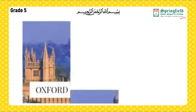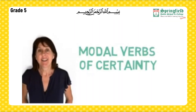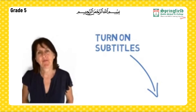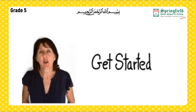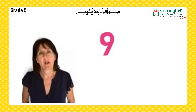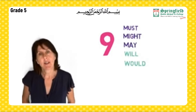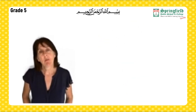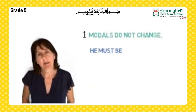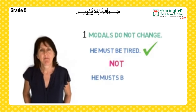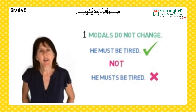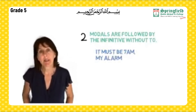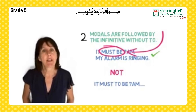Now here is a video on modal verbs of certainty. There are nine pure modal verbs: must; might and may; will and would; can and could; and shall and should. Remember: modals do not change — 'he must be tired,' not 'he musts.' Modals are followed by the infinitive without 'to' — 'it must be seven a.m.,' not 'it must to be seven a.m.'